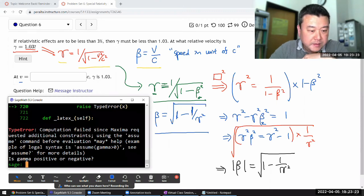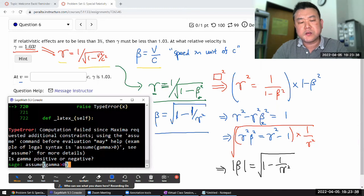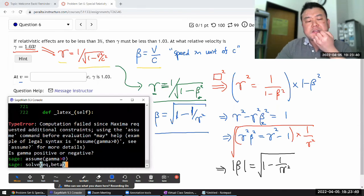So it's asking, is gamma positive or negative? It's actually even bigger than one, but at a minimum, gamma is positive. And in fact, I think if I simply say assume gamma greater than zero, it might still complain. Let's see.